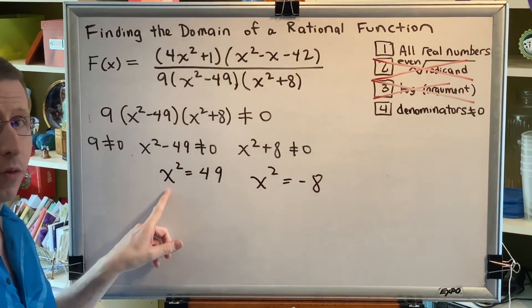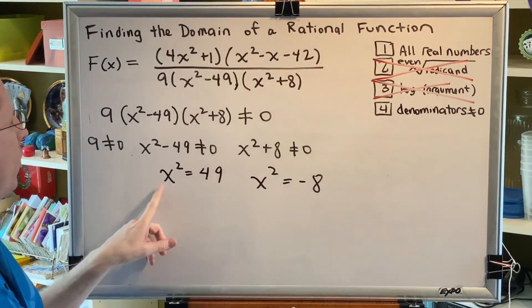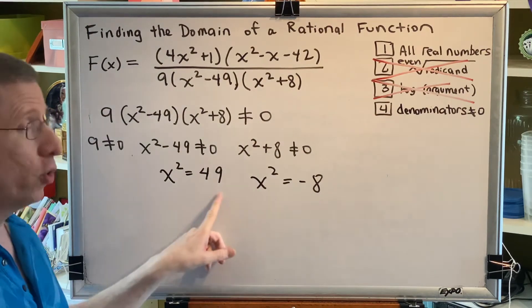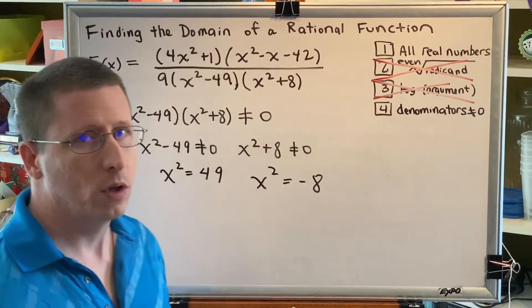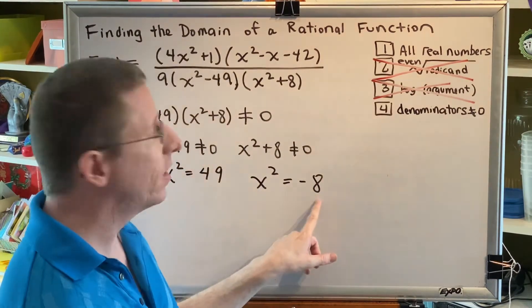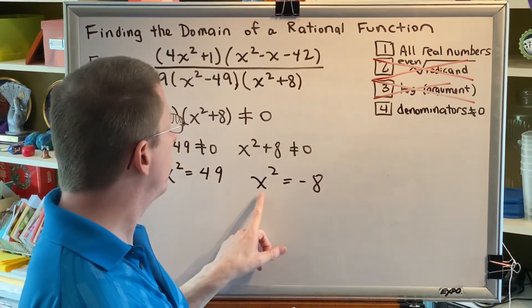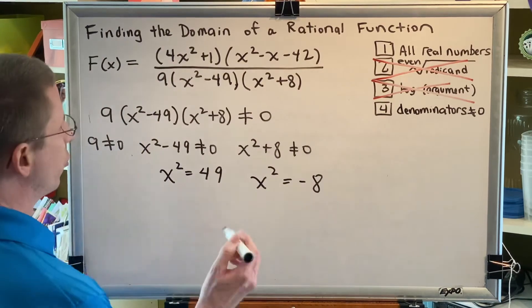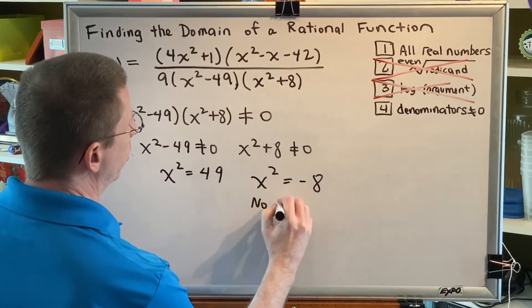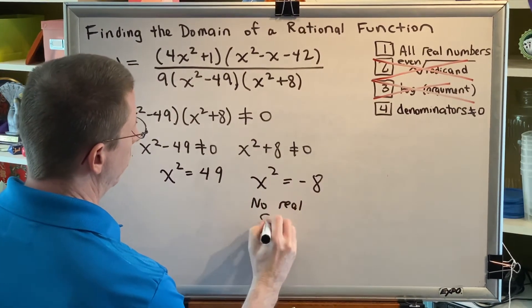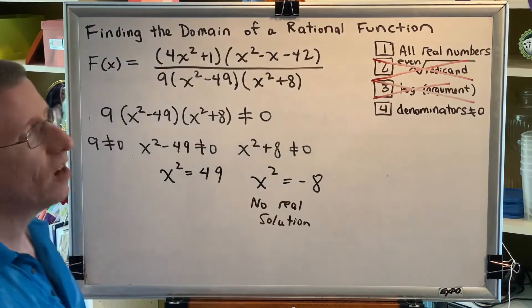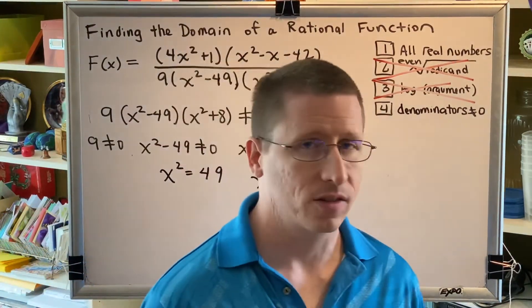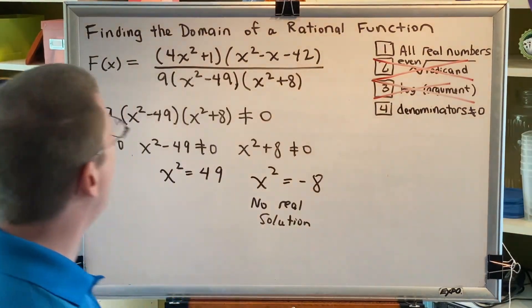What happens when you square a positive? You get a positive. What happens when you square a negative? You get a positive. And what happens when you square zero? You get zero. But what you don't get is a negative. So for that reason, x² = -8 has no real solution, which means this equation is not going to tell us anything about x. It's not going to affect our domain in any way.